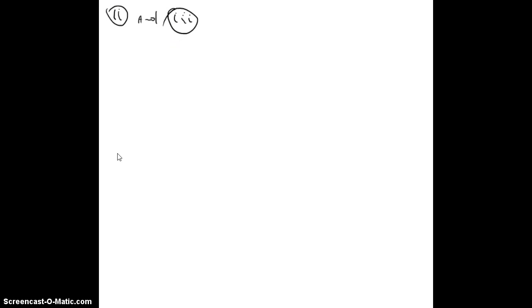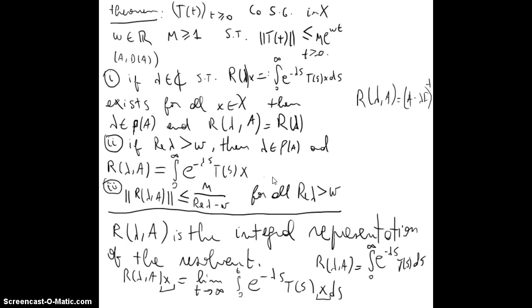Now parts 2 and 3. We wanted to show that if the real part of lambda is greater than omega, then lambda is in the resolvent set and the norm of R_lambda(A) is less than M over the real part of lambda minus omega. Recall we are going to use this bound with the real part of lambda minus omega.